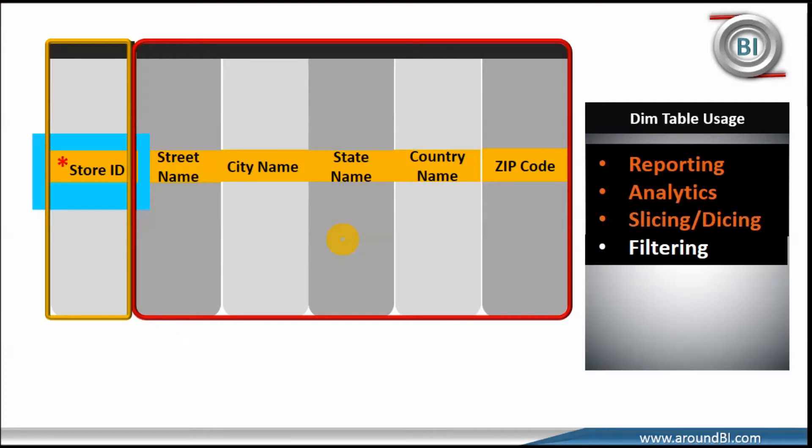We do various slicing and dicing and filtering of fact data using these attributes. If we come back to our example, attributes of store dimension will help in querying sales revenue for a store location or for a particular city or state. We can also group quantity sold or any other measure along store dimension attributes.